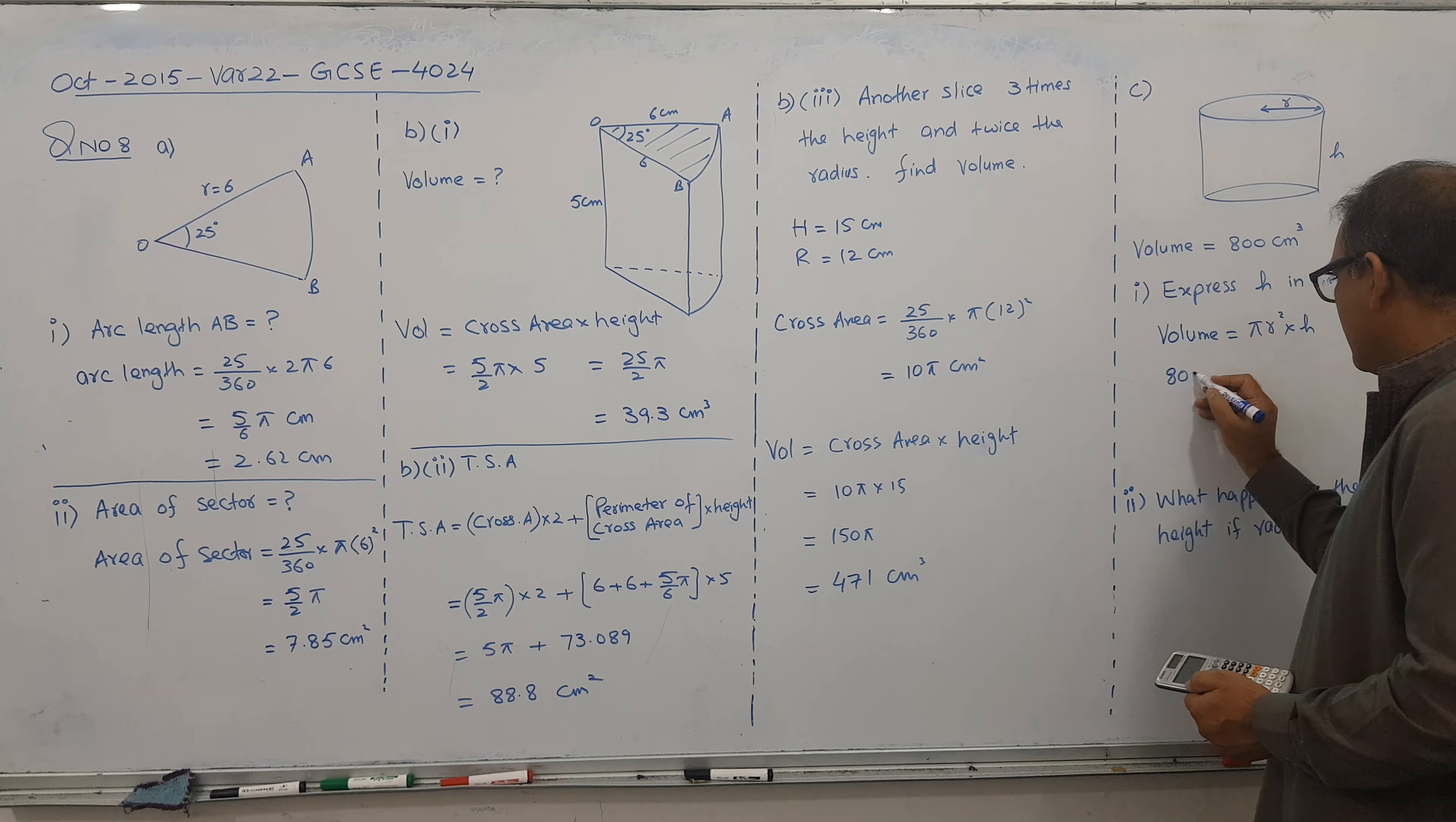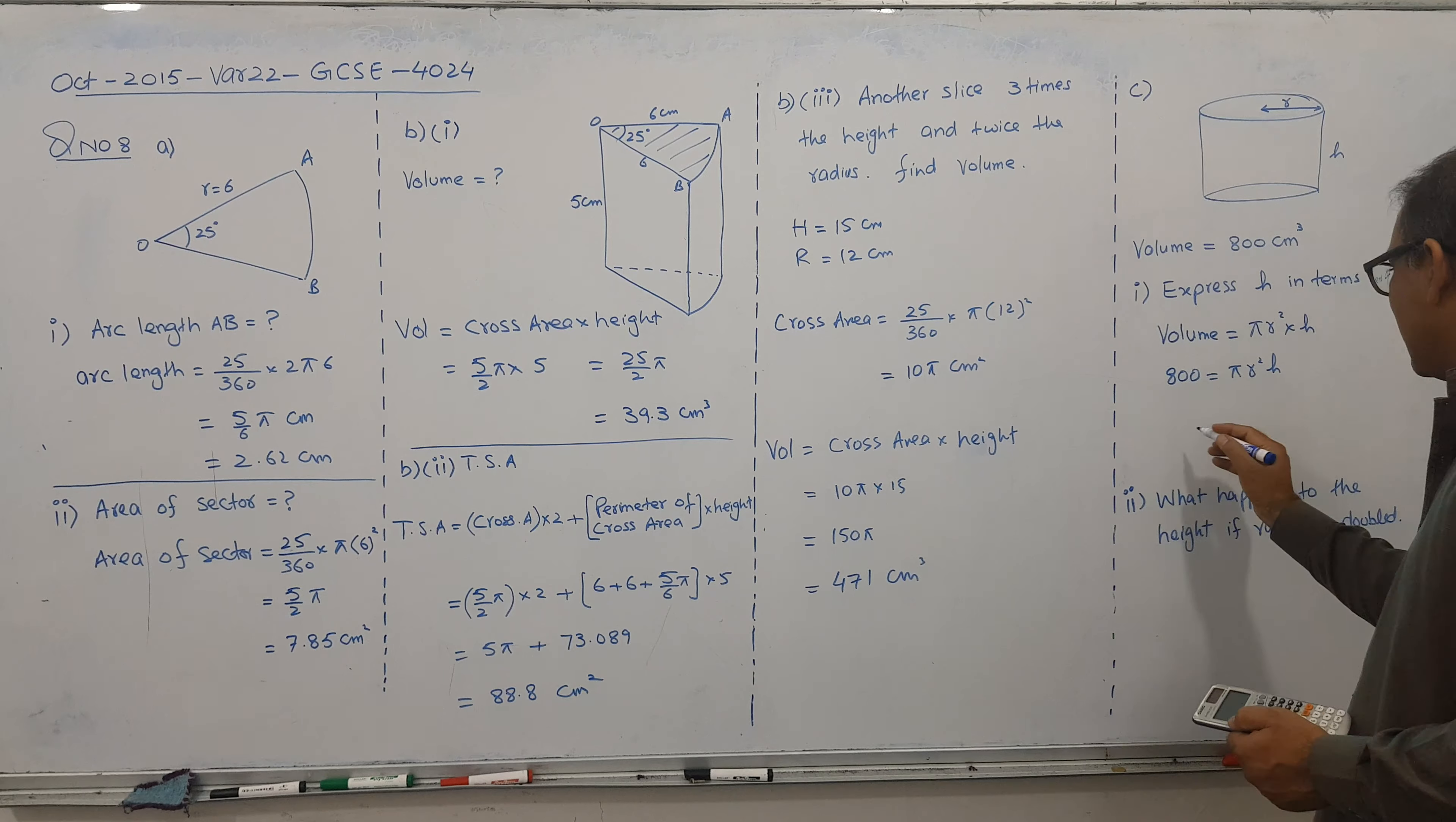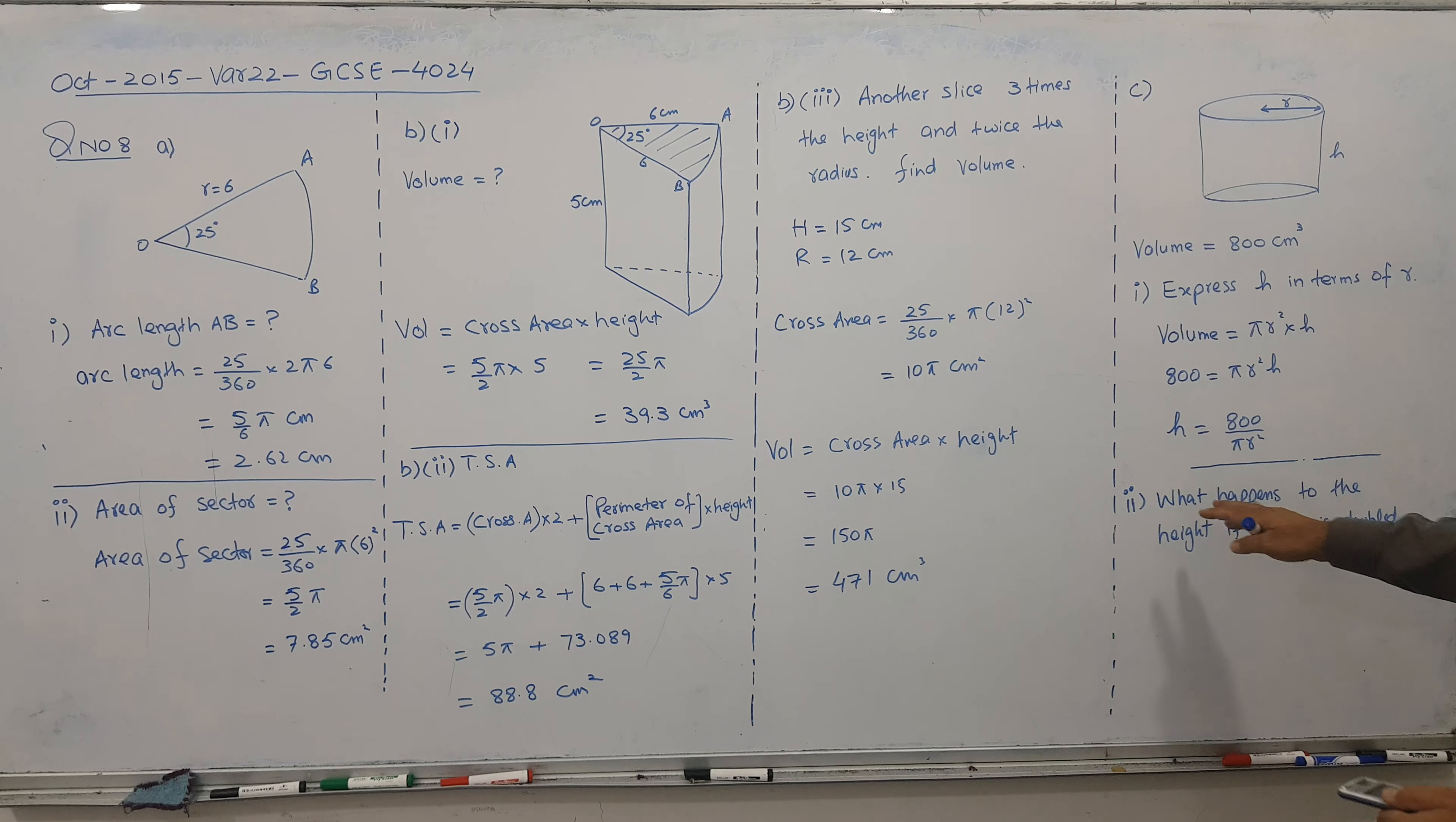Volume is 800. Radius is r. Height is h. But my target is h subject. These two terms will divide and that's it. So height becomes 800 divided by pi r squared. That's it. And we have done our job. This is interesting part. He said what happened to the height? The radius is double.